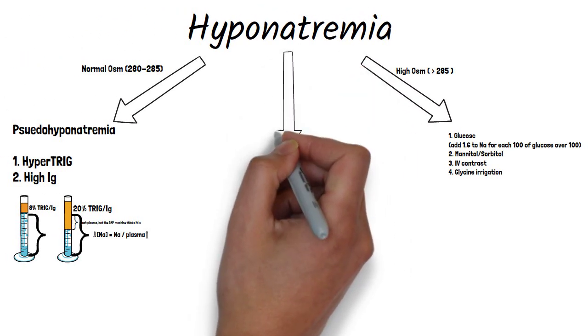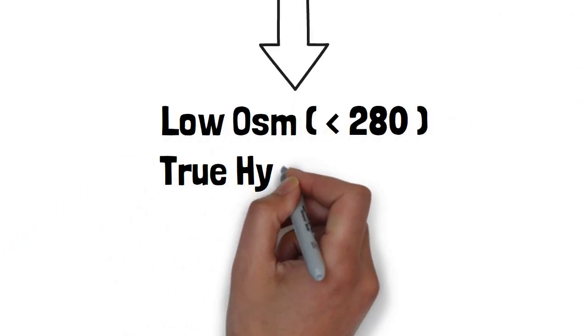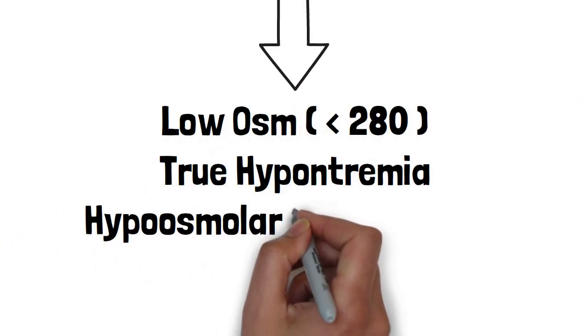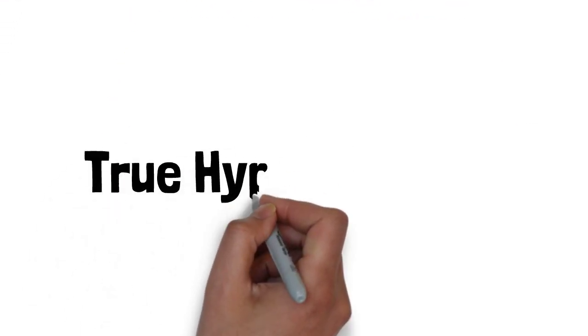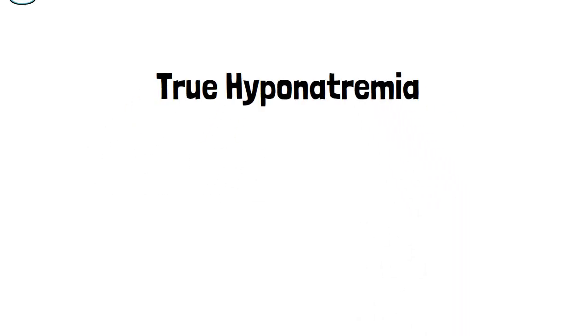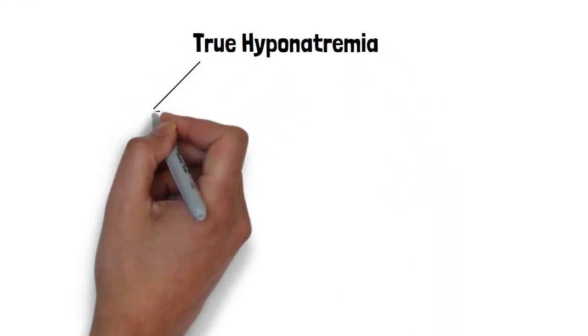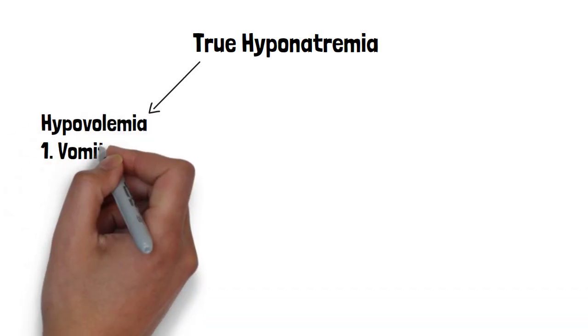Lastly is the one that we care about. This is someone who has a low serum osm. And this is labeled true hyponatremia or hypoosmolar hyponatremia. So after we've established true hyponatremia, we then have to go to volume status. And here we'll cover the extremes. Someone who's hypovolemic and hypervolemic.